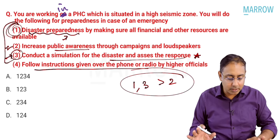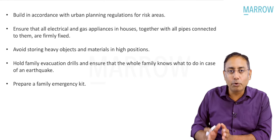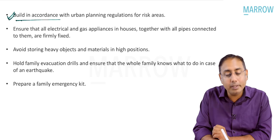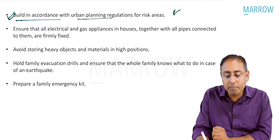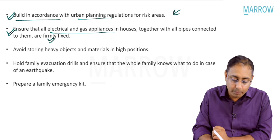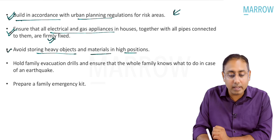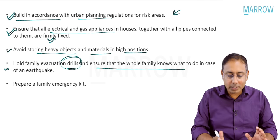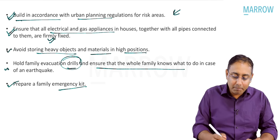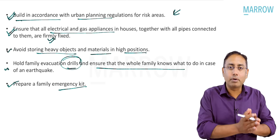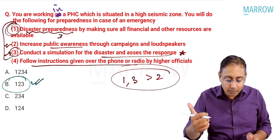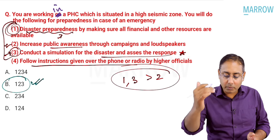Options one, two, and three together are the best answer. As per the Government of India protocol for disaster preparedness for earthquake: buildings must comply with urban planning regulations, electrical and gas appliances must be firmly fixed, avoid heavy objects in high positions, hold family evacuation drills, and ensure families know what to do. Option B — covering all three — is the correct answer.